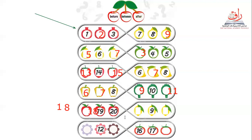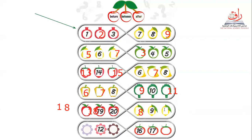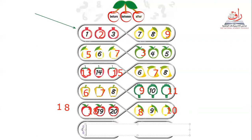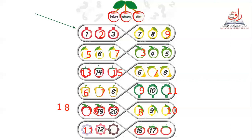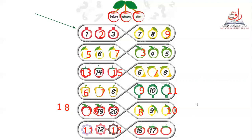Well done! Let's go next. What do we have? Number nine in the middle — before number nine? Eight. Excellent. And after nine? Ten. Well done, super! We have number twelve. Before number twelve? Eleven. Excellent! After twelve? Thirteen. Super! And we have sixteen, seventeen.